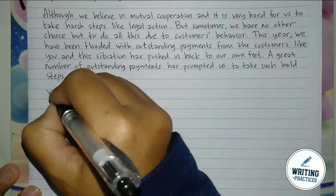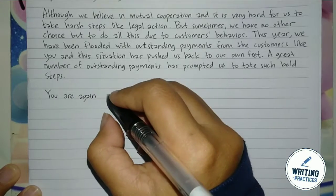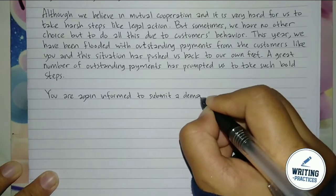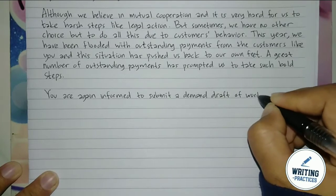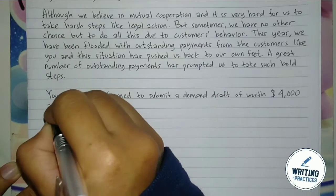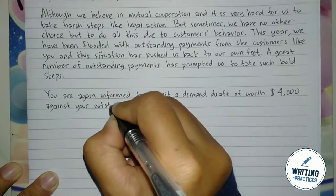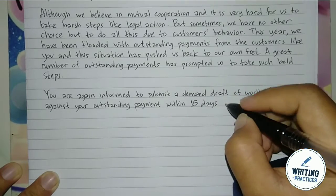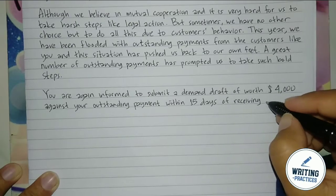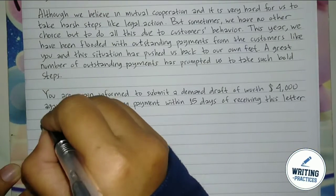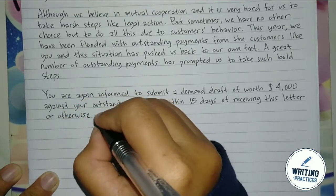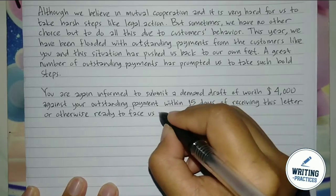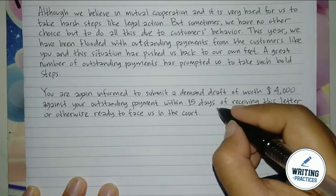In the third paragraph, this is where you give the last chance. You can give the recipient some days to complete the payment — for example, 15 days or even seven days. Tell the recipient to be ready to face you in court if he or she fails to pay within the remaining days.